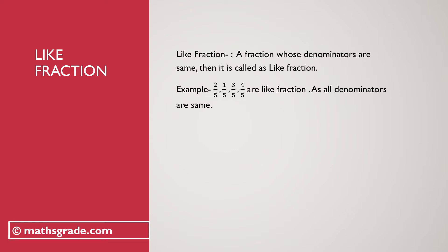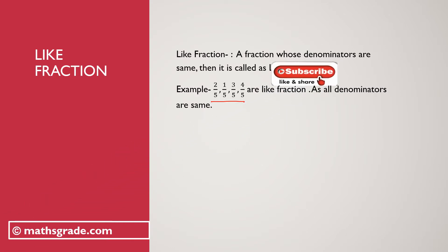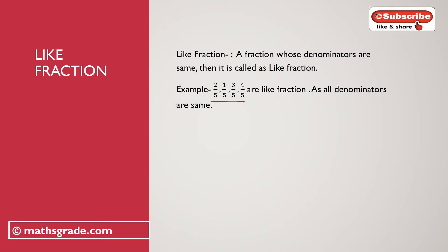For example, take 2 divided by 5, 1 divided by 5, 3 divided by 5, and 4 divided by 5. These are like fractions because all denominators are equal — that is, equal to 5.